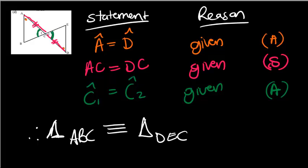So ABC is congruent to DEC and my reason for this is not angle side angle but side angle angle. Okay that's question three.